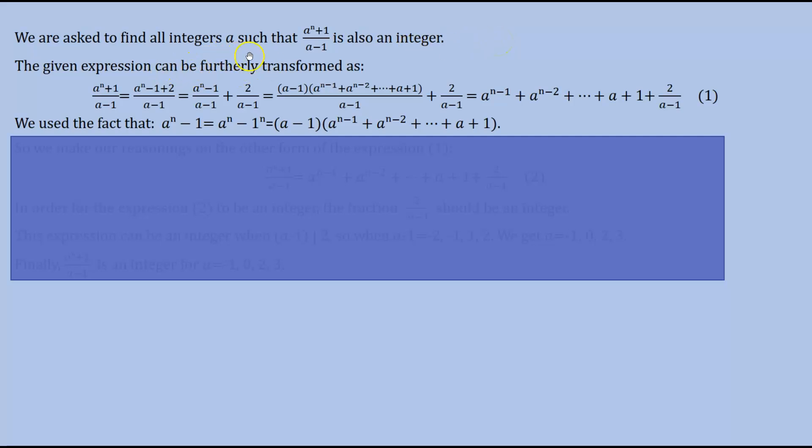The given expression can be further transformed and rearranged as (a^n+1)/(a-1) = (a^n-1+2)/(a-1).